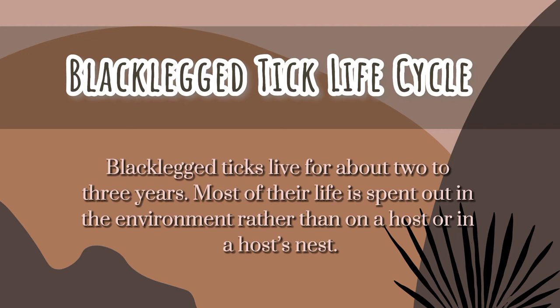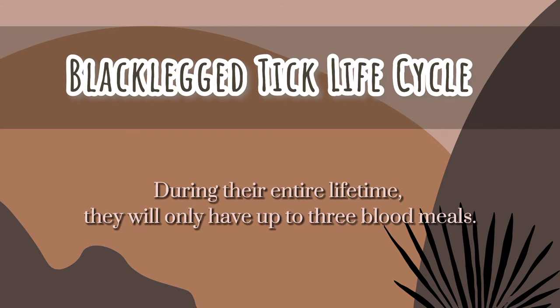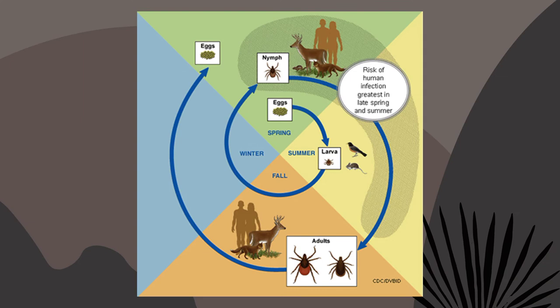Black-legged ticks live for about 2 to 3 years. Most of their life is spent in the environment rather than on a host. During their entire lifetime, they will only have up to 3 blood meals. The life cycle begins when the female lays eggs. As the egg matures, it develops into a larva, then a nymph, and finally an adult male or female. In the spring of their first year, eggs hatch into larvae. Larvae prefer to feed on the blood from small mammals like mice and birds. During this first meal, the larvae may pick up a disease agent, like the bacteria that causes Lyme disease, while feeding on a small mammal such as a white-footed mouse.